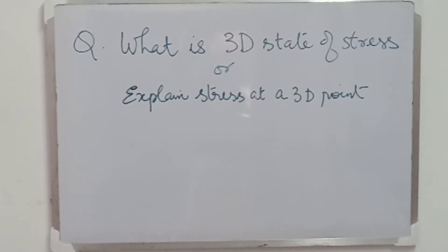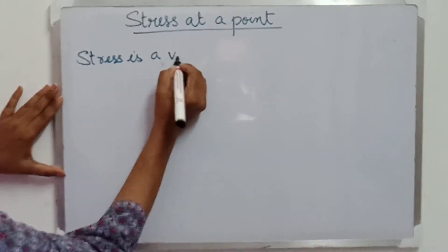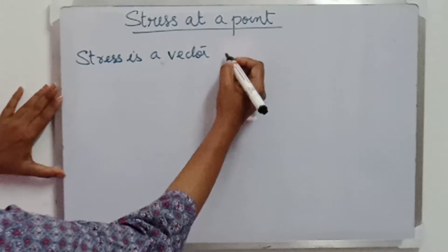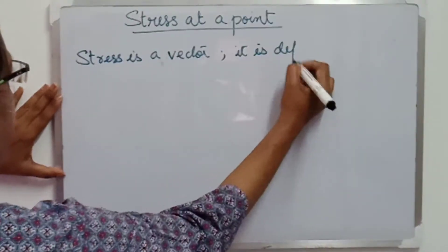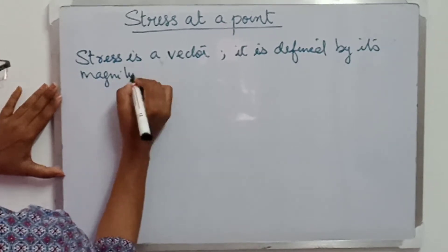This is one probable question from module 1. What is three-dimensional state of stress or explain stress at a 3D point? For that, we need to explain what is stress. Here we are considering stress as a vector as it is defined by its magnitude and direction.